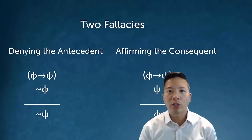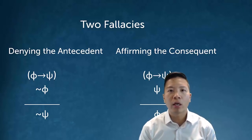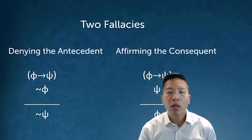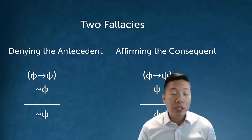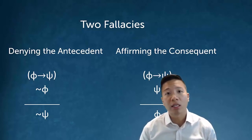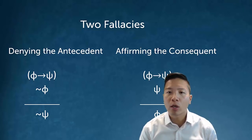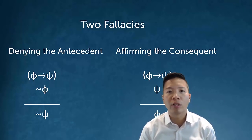The second fallacy is affirming the consequent. If we have a conditional statement and we know that the consequent is true, lots of people think we can infer that the antecedent is true as well. For example: if it's raining, then the sidewalks are wet — well, the sidewalks are wet. Does that mean it's raining? Actually, no. It could be a variety of things, like someone just washing their sidewalk. So affirming the consequent is also an invalid inference pattern.